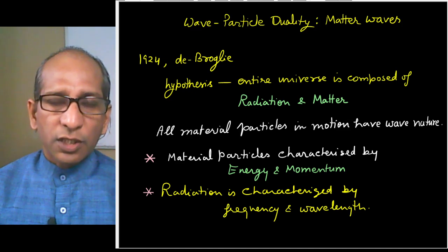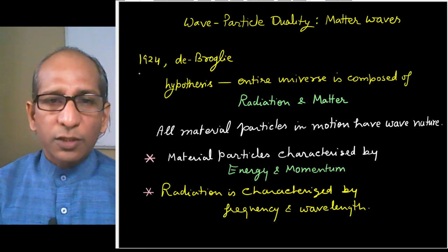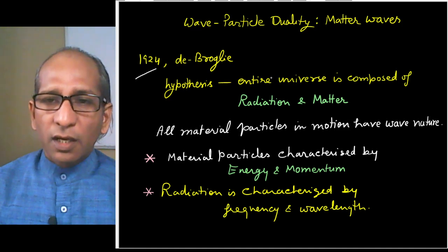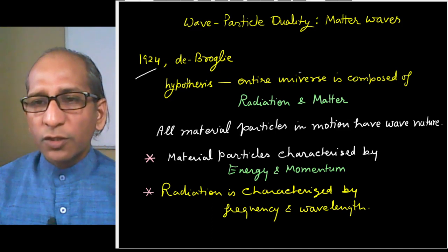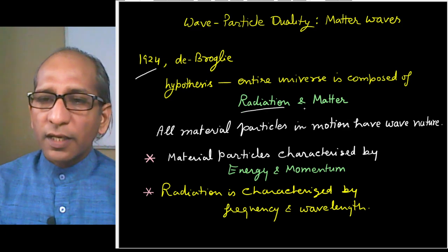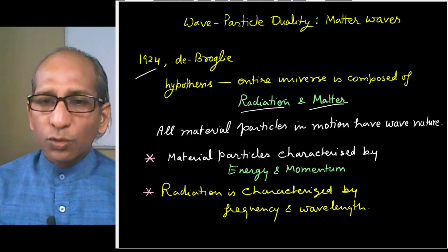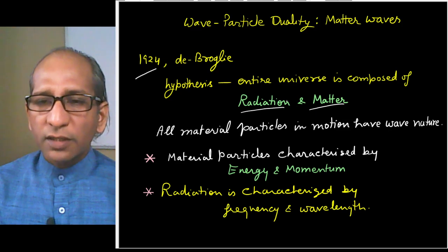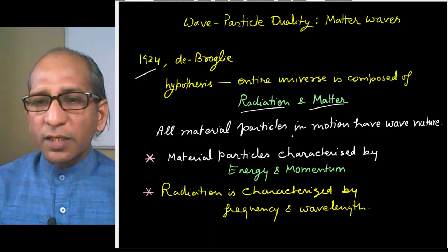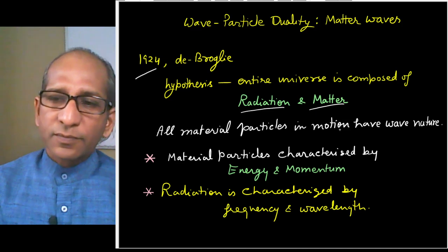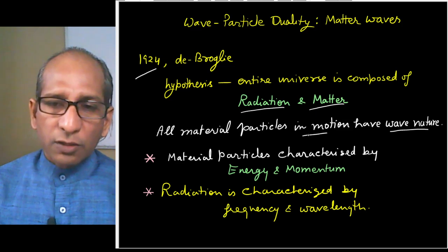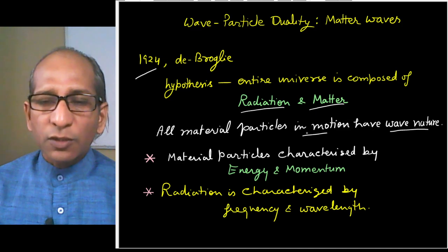De Broglie gave this hypothesis in 1924. According to this hypothesis, it was assumed that the entire universe is composed of a combination of radiation and matter. Material particles that have motion also have wave nature — this is the most important part.